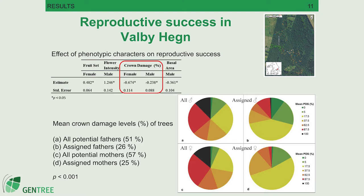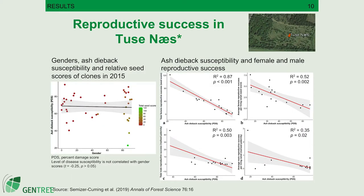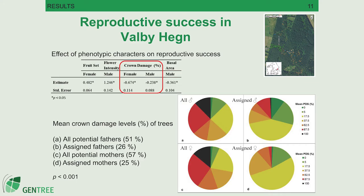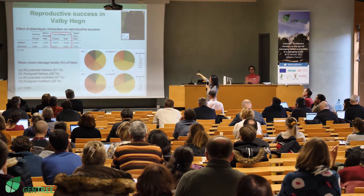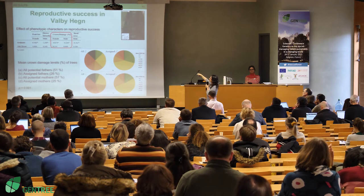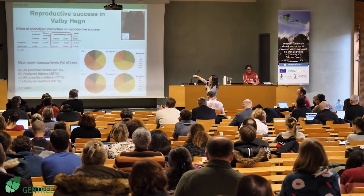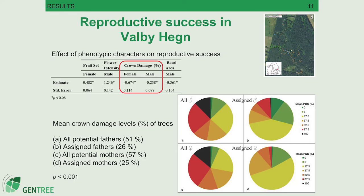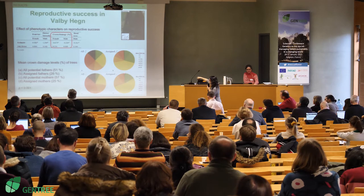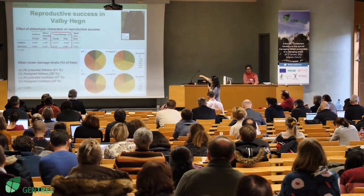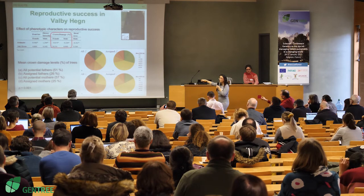When we checked the result in Valbehind — the clonal seed orchard — we also wanted to test this hypothesis in a natural forest in situ. We sampled the same offspring and mature trees in the forest. The results also show that crown damage negatively affects both female and male reproductive success. The pie charts show that all assigned parents are actually healthier than the population average.